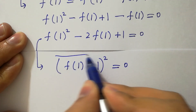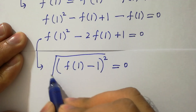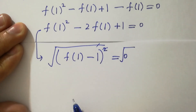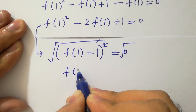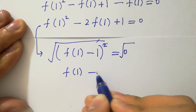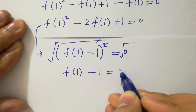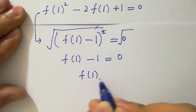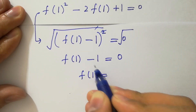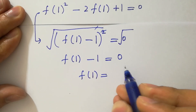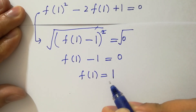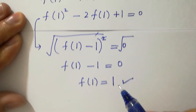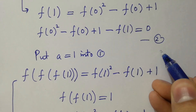Taking square root on both sides, the square cancels and we have f of 1 minus 1 equals 0, so f of 1 equals 1. Recall the second equation.